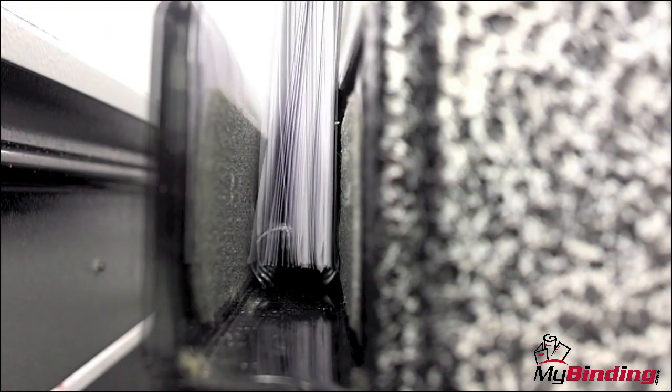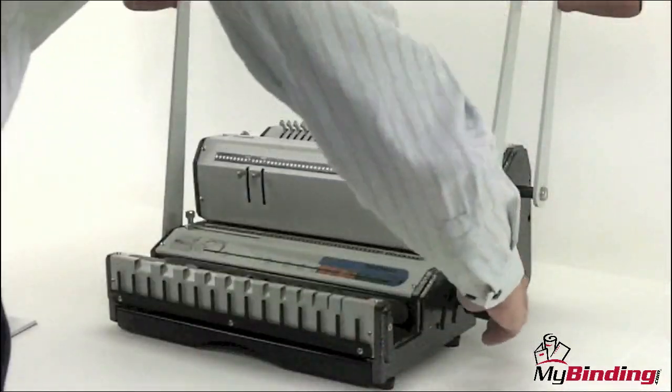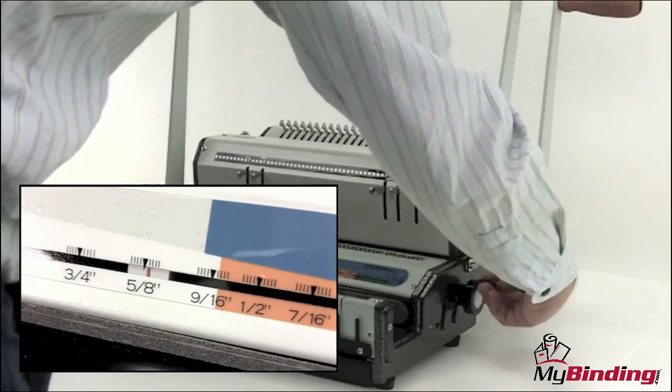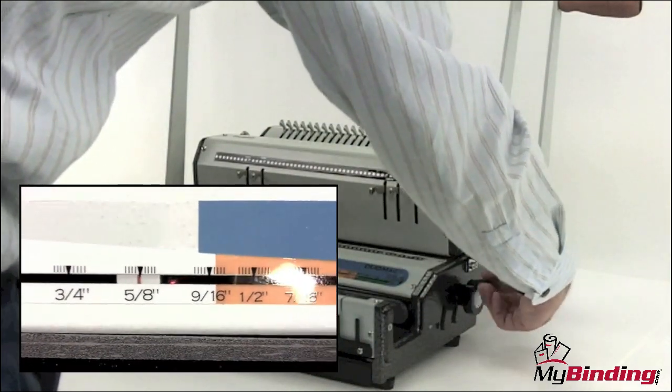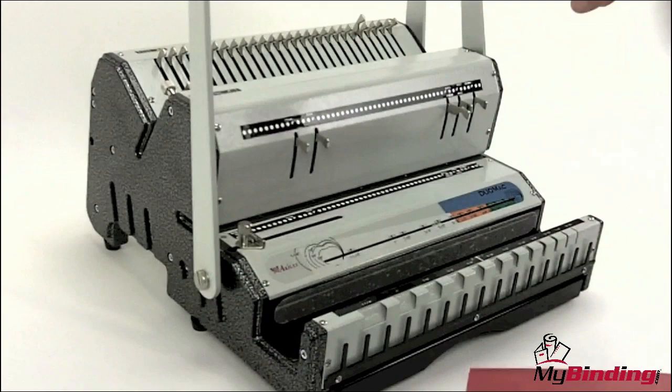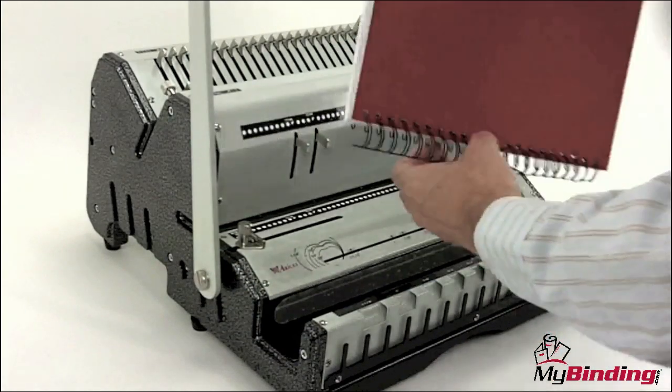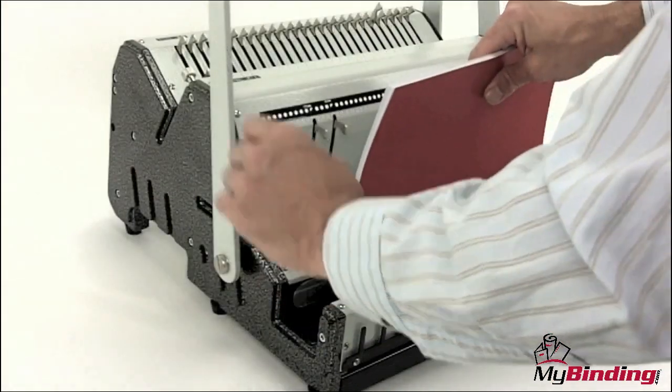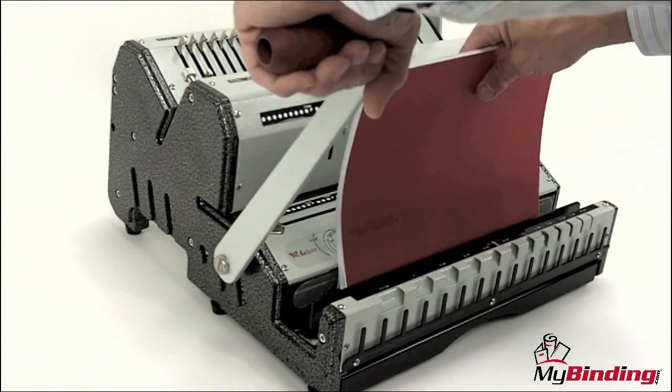When it comes to the closer, be sure to set it according to the size wire spine you'll be using. Under-closed or over-closed wires do not work or look very nice. You place your book and its spine with the C-shape of the spine facing down into the closer, and you clamp it closed.